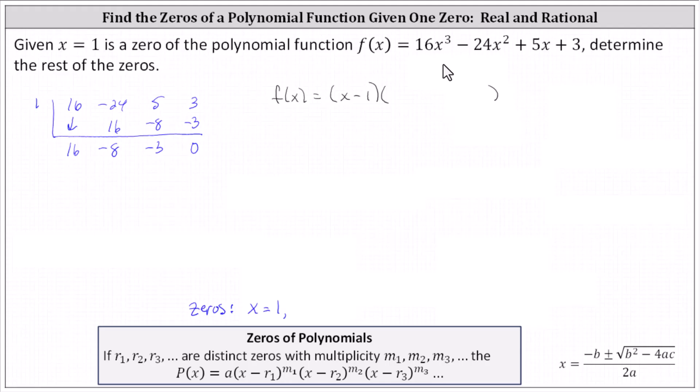And because we're dividing a degree three polynomial by a degree one polynomial, this remaining factor is degree two, and therefore the 16 is the coefficient of the x squared term. The remaining factor is 16x squared minus 8x minus 3.